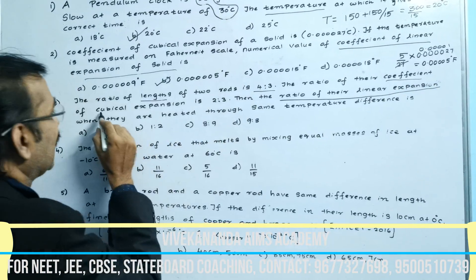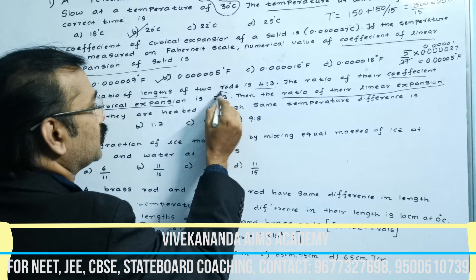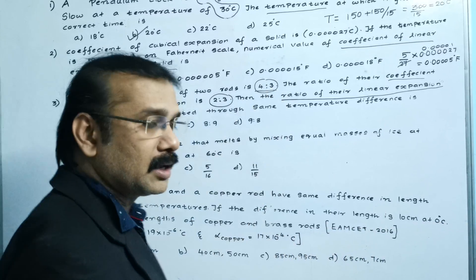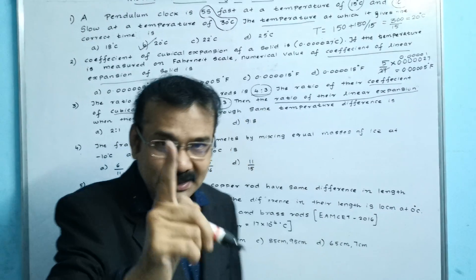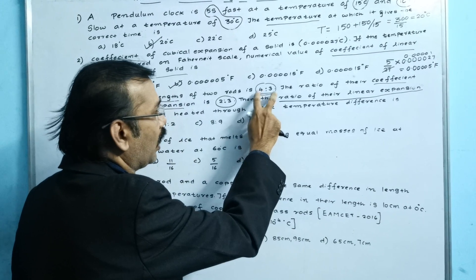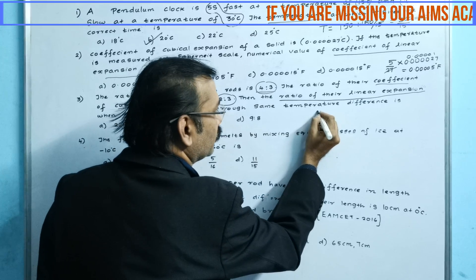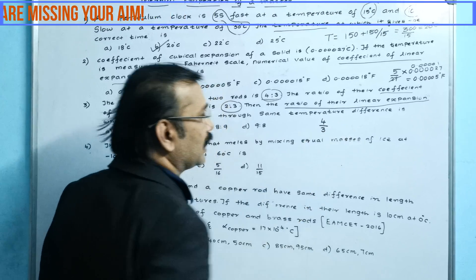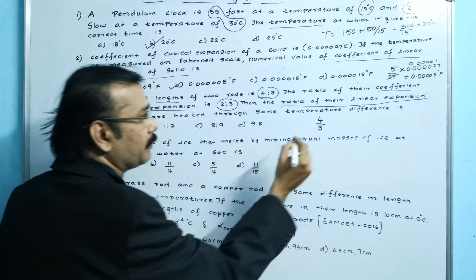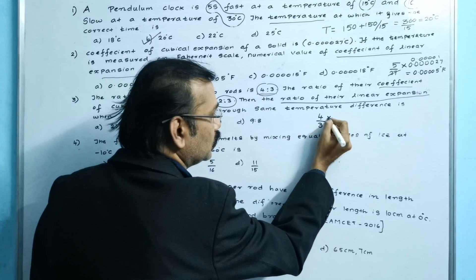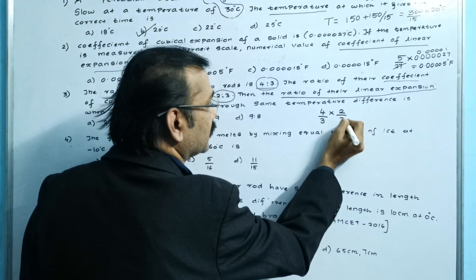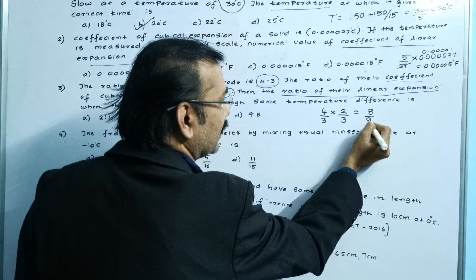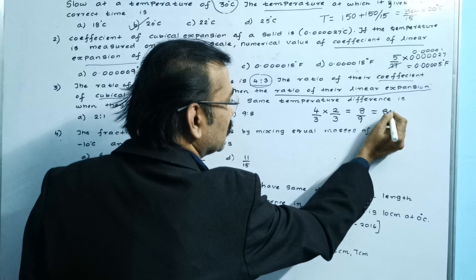In the third question, the coefficient of cubical expansion ratio has been given as 2 is to 3 and 4 is to 3. Write down these numbers one by one: 4 by 3, then into 2 by 3. If you multiply, you get 8 by 9. The answer is 8 is to 9.